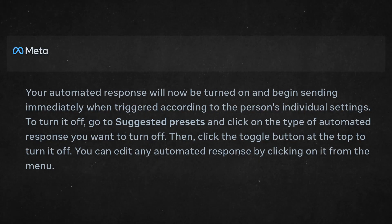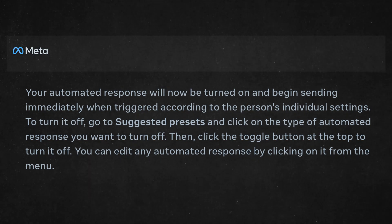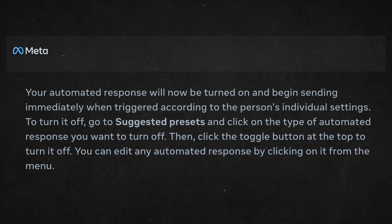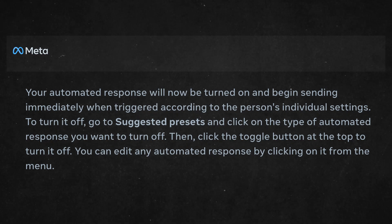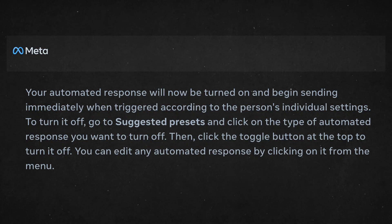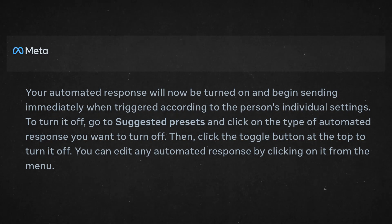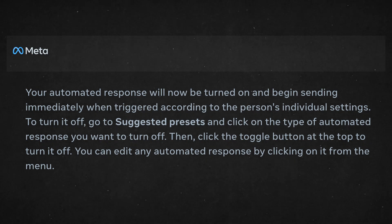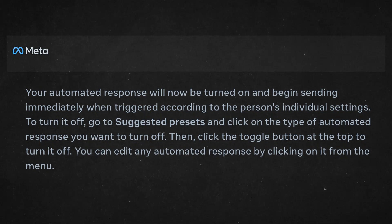Your automated response will now be turned on and begin sending immediately when triggered according to the person's individual settings. To turn it off, go to suggested presets and click on the type of automated response you want to turn off, then click the toggle button at the top. You can edit any automated response by clicking on it from the menu.